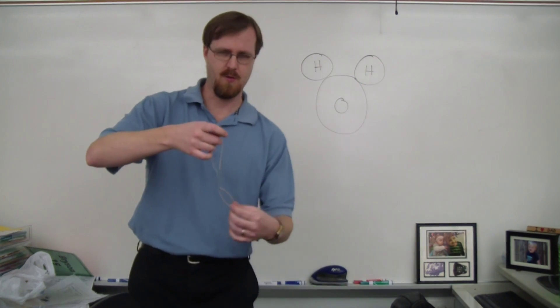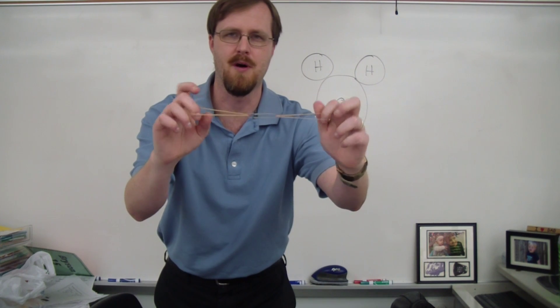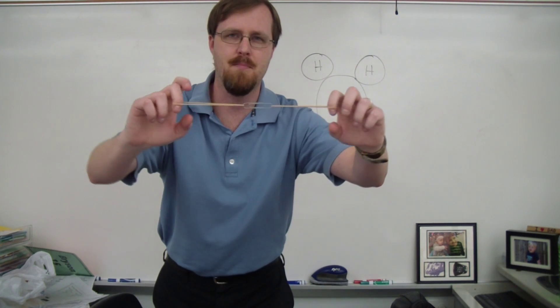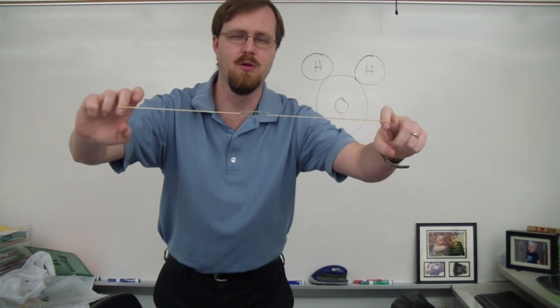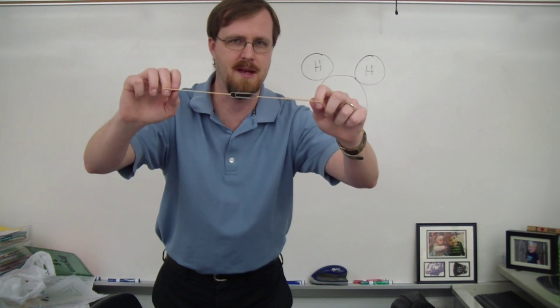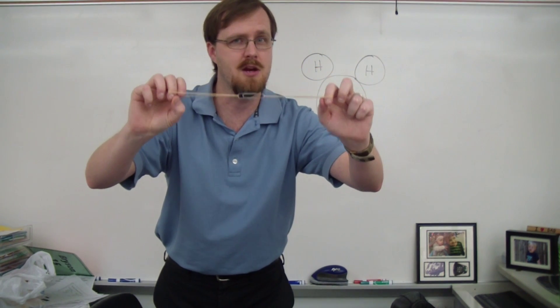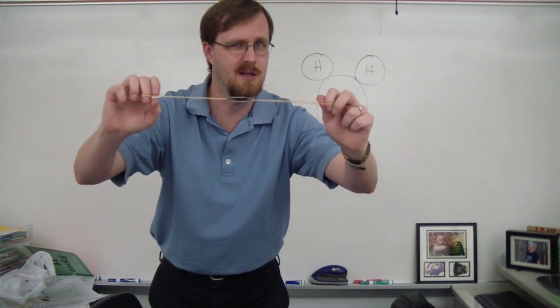Okay, so if you guys can see right here I've got two rubber bands with a paper clip on the inside, and if I pull on the two rubber bands, you can see that there is an equal sharing of this paper clip by the two rubber bands. This is like a non-polar covalent compound where all the electrons are equally shared.